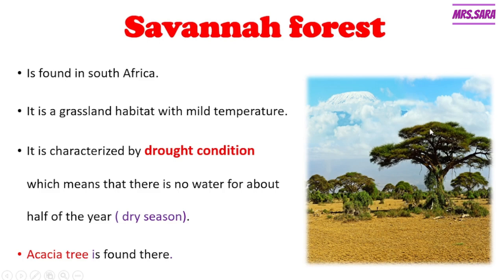So savannah forest is a grassland habitat with mild temperature. It is characterized with something called drought condition. What is the meaning of drought condition? That means there is no water for about half of the year. We call the season when there is no water dry season. So savannah forest has a dry season with no water for half of the year, and we call this drought condition.